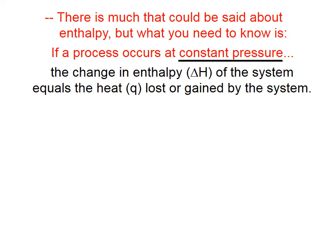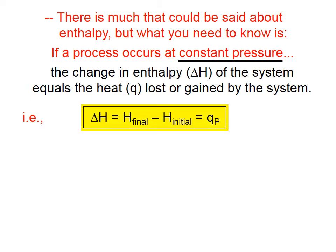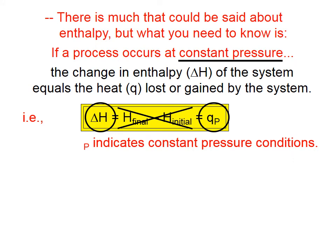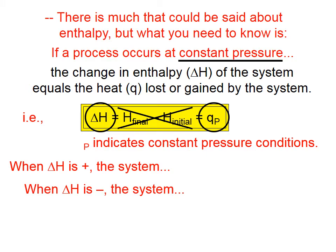We can see why enthalpy is symbolized by capital H, because if we have a process at constant pressure, the change in enthalpy is equal to the heat that's lost or gained. In other words, delta H is equal to H final minus H initial. Delta in science always means final minus initial, so delta H would be final H minus initial H, and that's equal to Q. That middle part of that equation, we don't really care about. It's only the outside. The change in enthalpy is equal to the heat that is lost or gained, where the little p below the Q indicates constant pressure conditions.